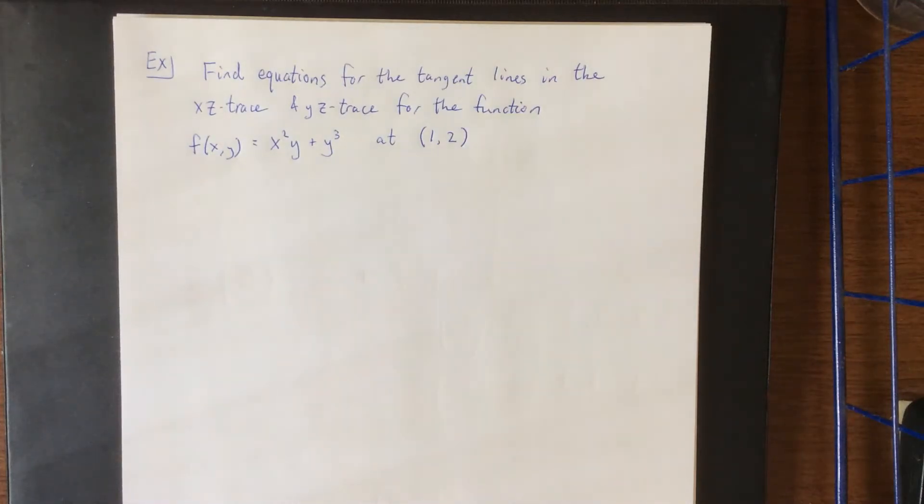In this example we're going to not only take a couple of partial derivatives but also actually interpret those partial derivatives. We're going to find equations for the tangent lines in the xz trace and the yz trace for the following function.